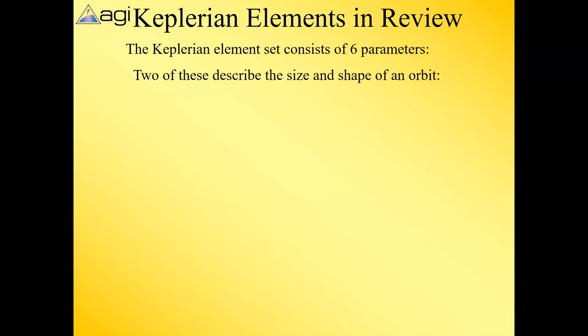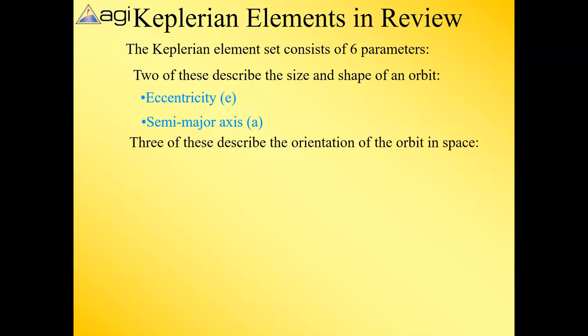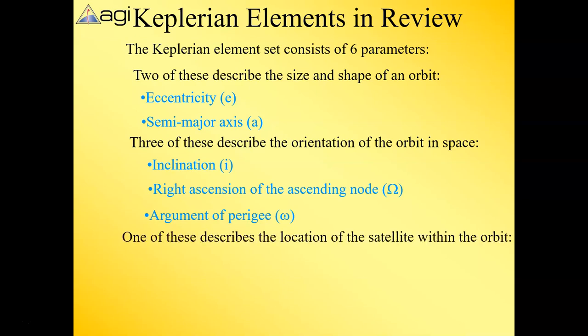Let's review what we've learned in parts one and two. There are two things that describe the size and shape of the orbit: eccentricity and semi-major axis, e and a. Then we need to figure out what the orientation of that shape is—inclination, right ascension of the ascending node, and argument of perigee. Remember, those are both angles. Finally, where is that satellite on that ellipse? Is it at perigee? Where is it with respect to perigee? That's called true anomaly.